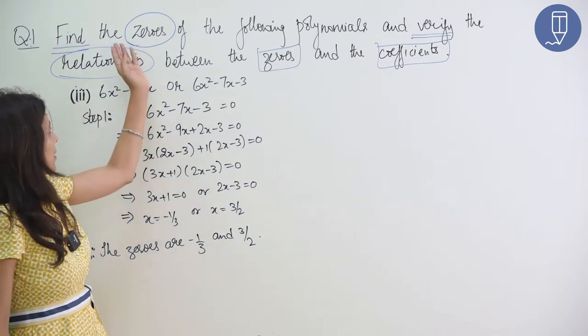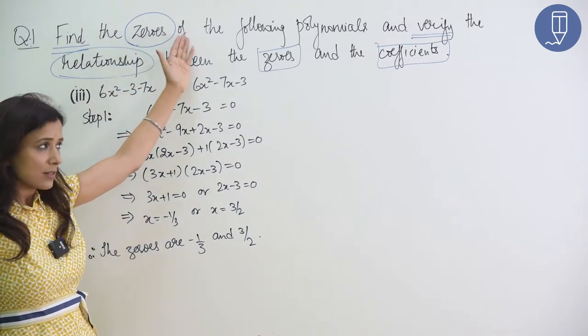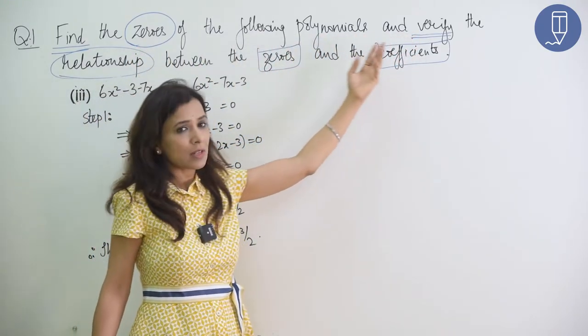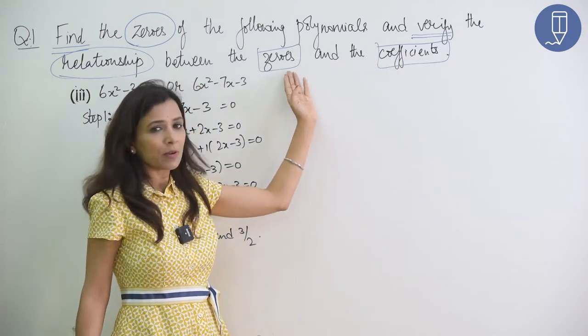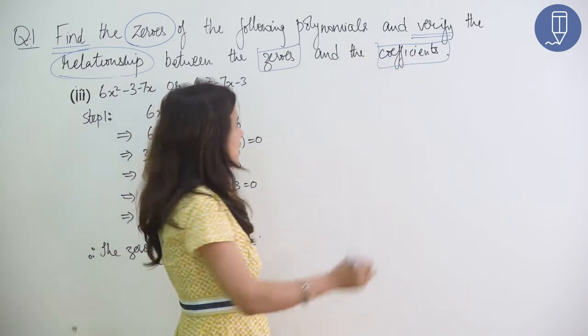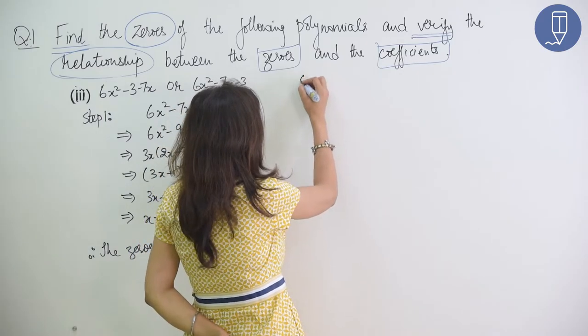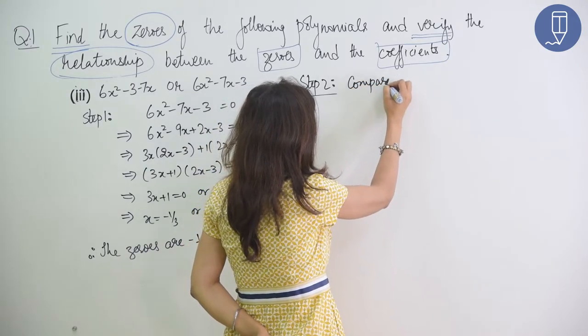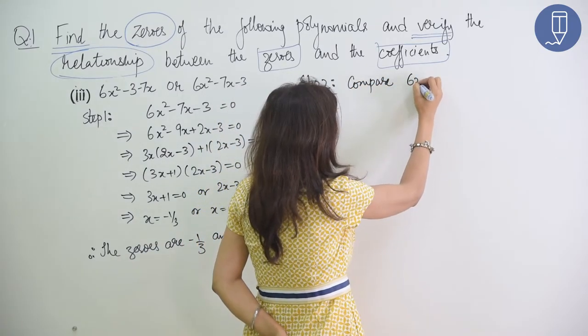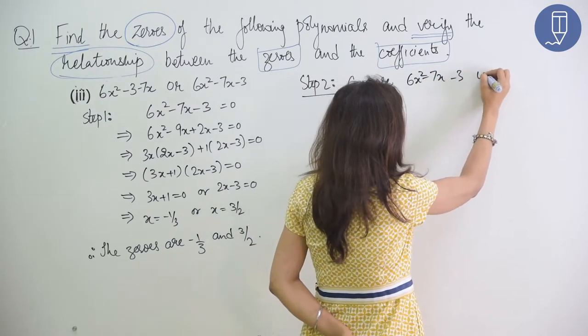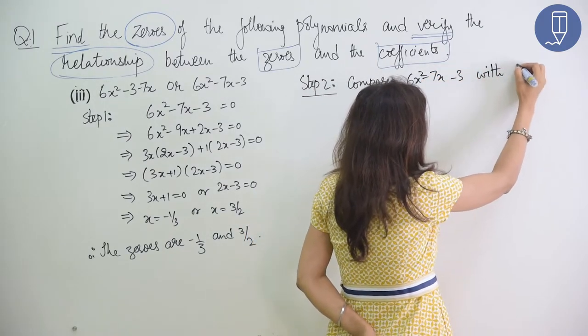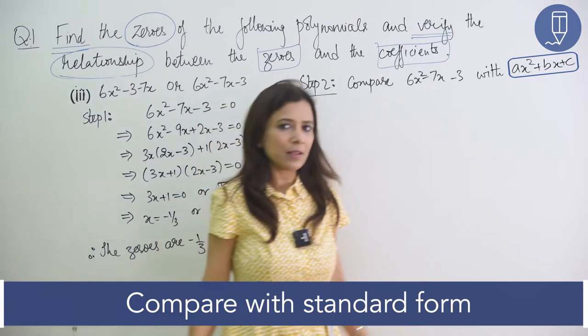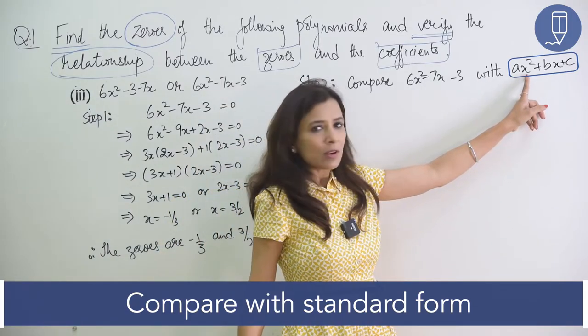Now, we have two zeros. The first part is going to be find the zeros. Now, what do we have to do? Verify the relationship between the zeros and coefficients. We have already removed the zeros. We have removed the coefficients. So, what do we do with the coefficients? Compare 6x² minus 7x minus 3 with ax² plus bx plus c. Now, we will compare these two.